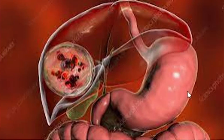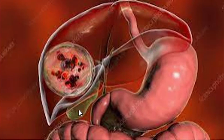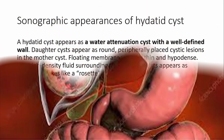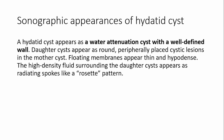Here is our stomach, then our esophagus and the duodenum. You can see the colon — the transverse colon is here. Anatomically, this is our gallbladder. Hydatid cysts have variable sonographic appearances. I am going to highlight some of the sonographic features you are supposed to look at when you see a cyst in the liver.